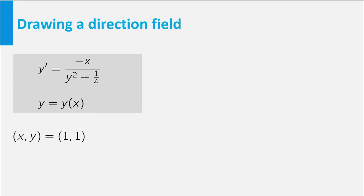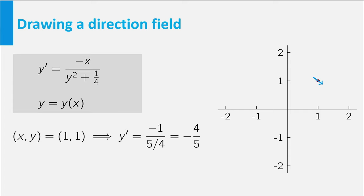From the differential equation it follows that the derivative of the solution in 1 equals minus 1 divided by 5 fourths, which is minus 4 fifths. What does this mean? It means that the tangent line at the graph of the solution in the point has slope minus 4 over 5. Here you see a small part of this tangent.